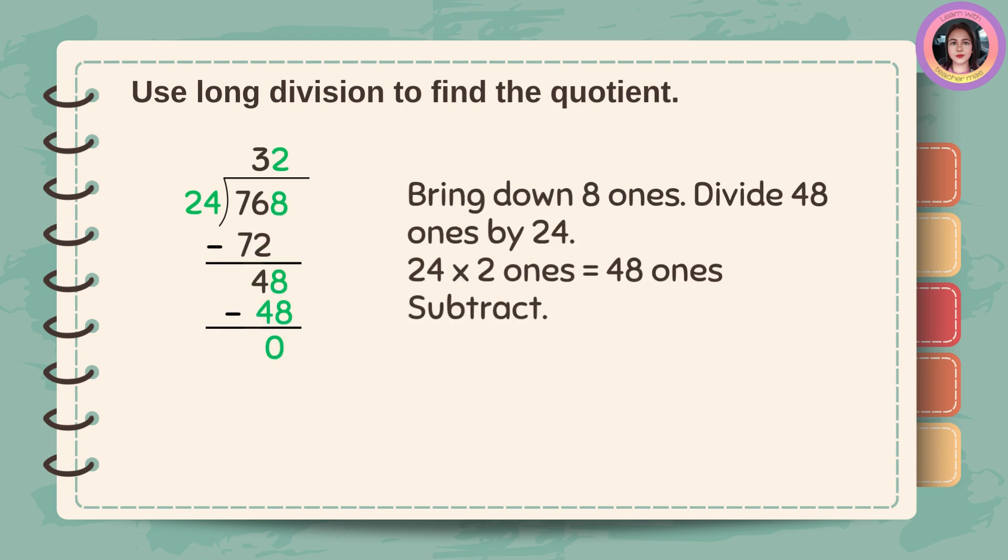Bring down 8 ones. Divide 48 ones by 24. 24 times 2 ones is equal to 48 ones. And then subtract. 48 minus 48 is 0.